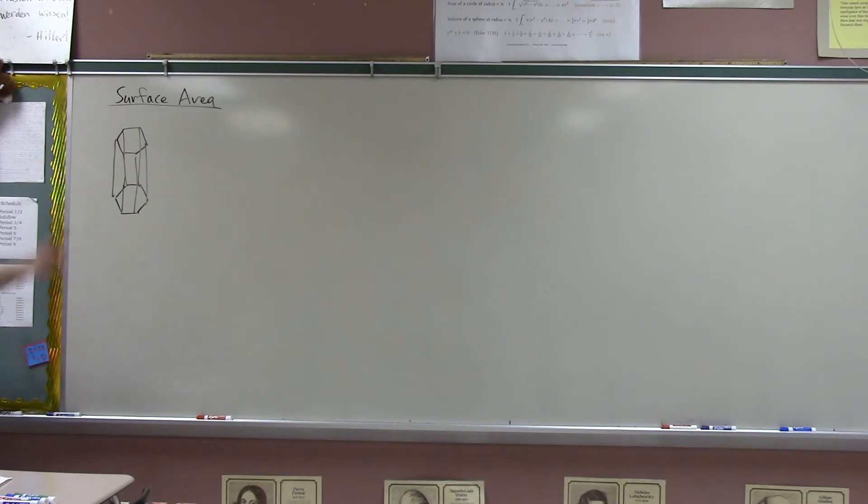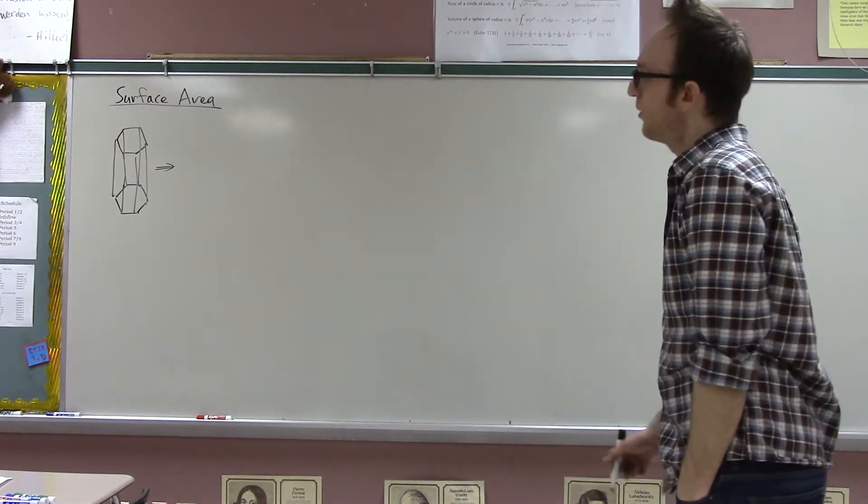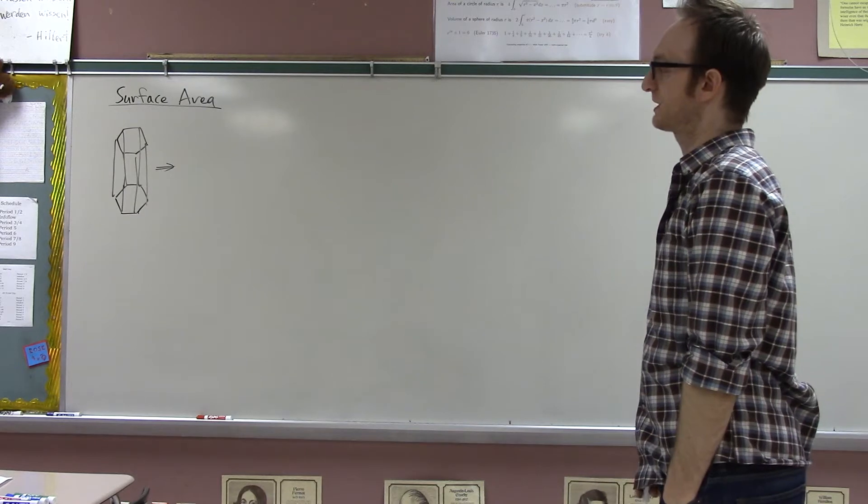So, what is the surface area? Well, the surface area is just the area of all the faces of the prism. And the idea is to decompose this prism into its so-called net. And the net is just a 2D picture of all of the faces of the object sort of laid out.